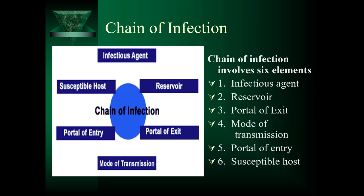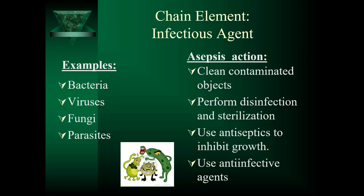For an infection to occur, a chain of events must take place as outlined on the slide. We look to break that chain at any point through the use of infection control measures, decreasing the likelihood that an infection can take place. We'll take a brief look at each element, starting with the infectious agent or pathogen, which includes bacteria, viruses, and fungi.